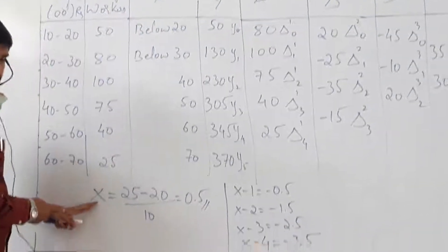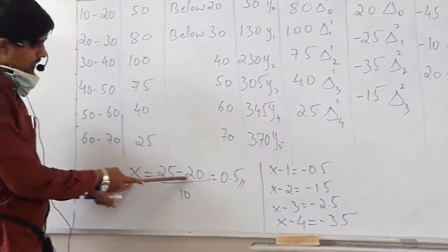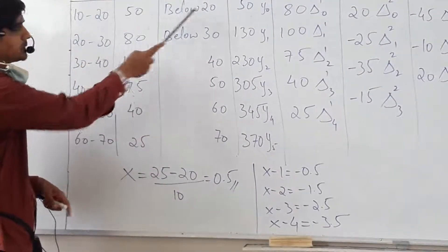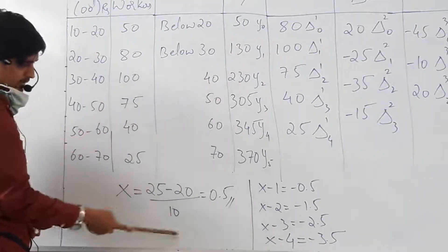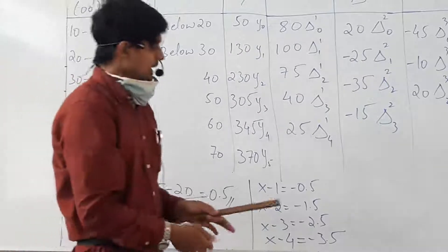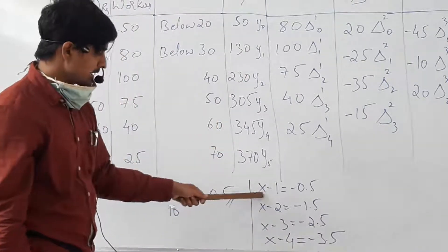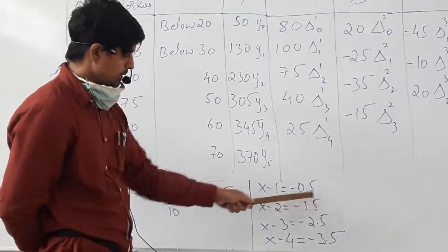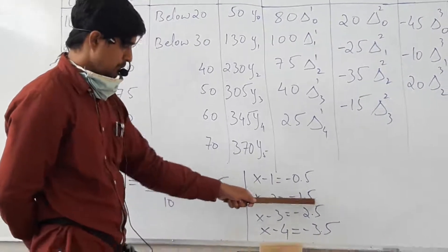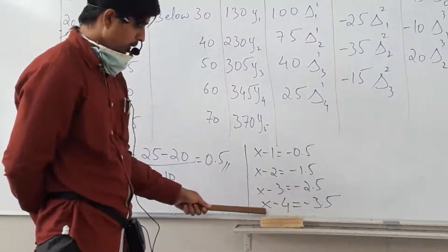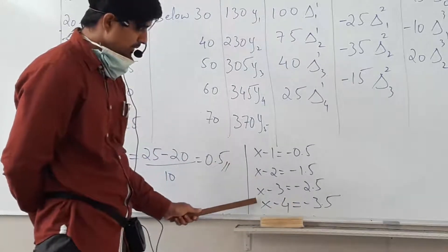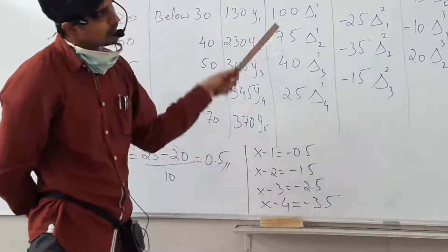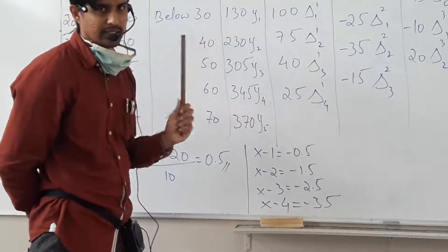Let me check here. So x — the candidate value is below 25, with origin at 20, class interval 10. So x = (25 − 20)/10 = 0.5. Therefore x−1 = −0.5, x−2 = −1.5, x−3 = −2.5, x−4 = −3.5. These are the values of x, x−1, x−2, x−3, x−4 required for substitution.